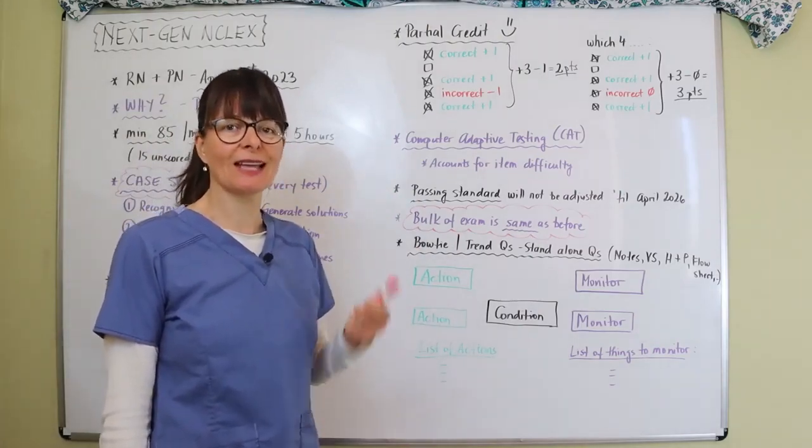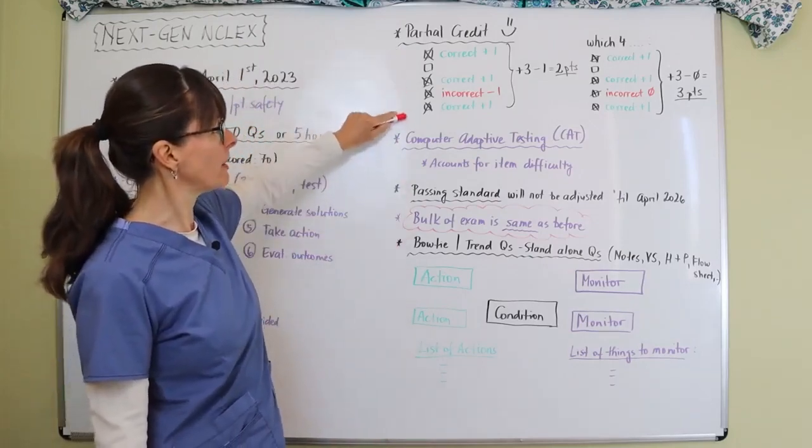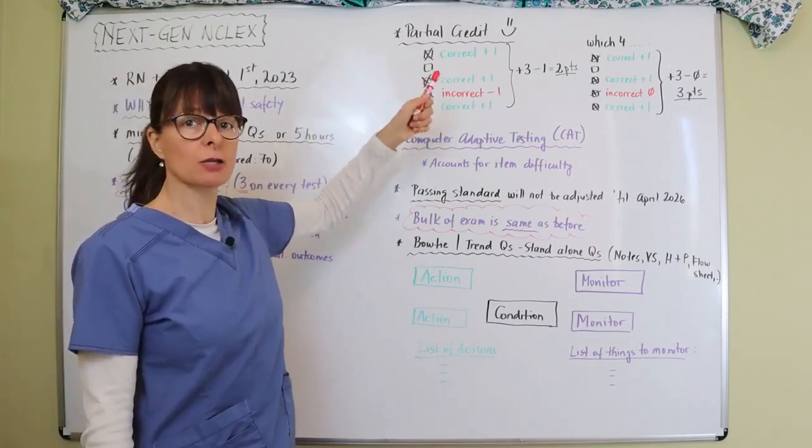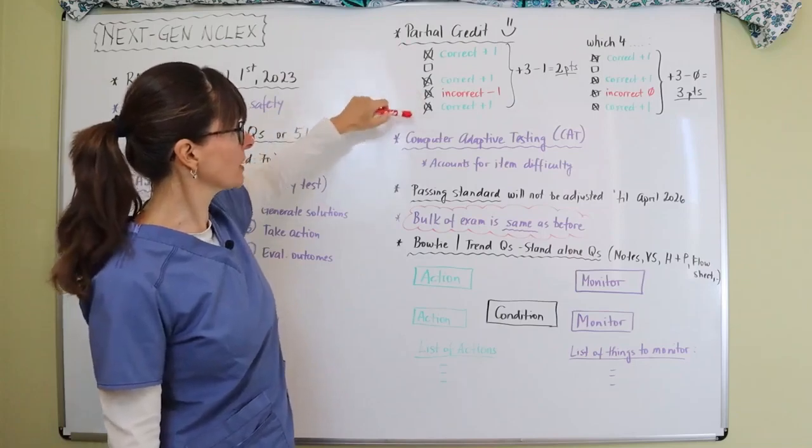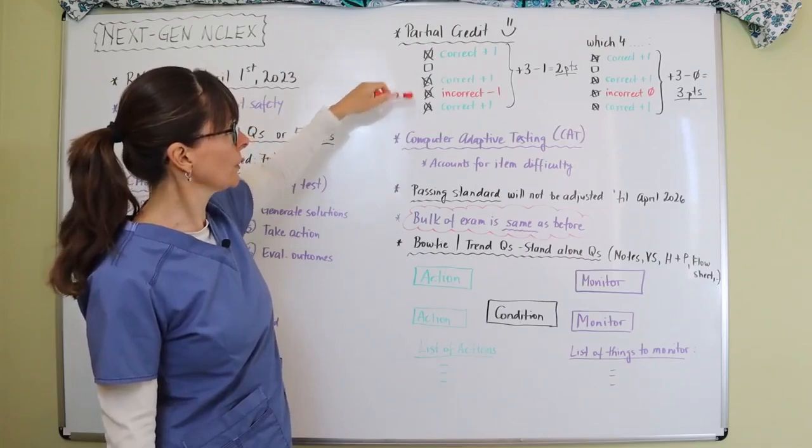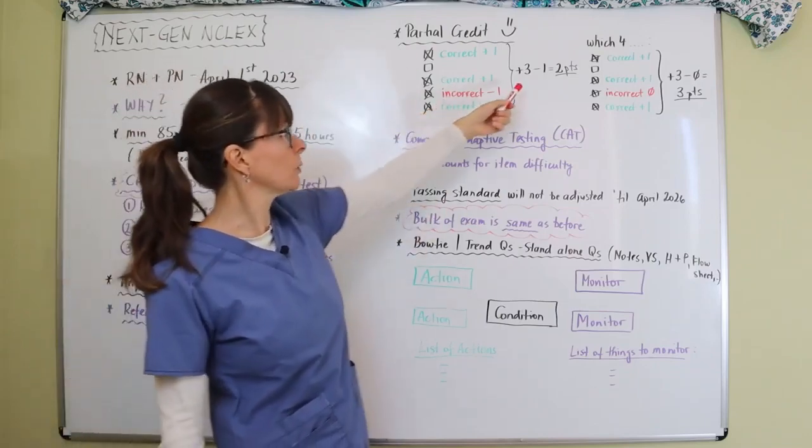The way it works: if you have a select all that apply question, let's say there's five possible answers and it just says select all that apply, so you don't know if it's one or if it's all five. So you come up with four choices here and three of them are correct and one is incorrect.